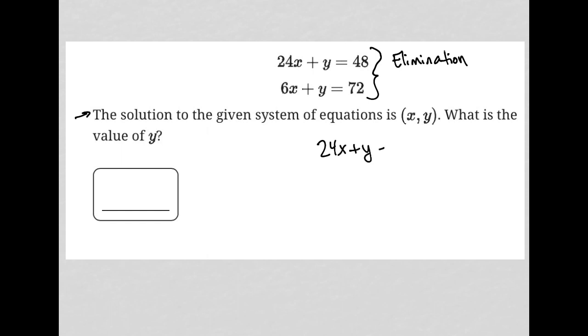24x plus y equals 48. And 6x plus y equals 72. So here's the process of elimination. I want to eliminate x, so I need to multiply the second equation by negative 4.